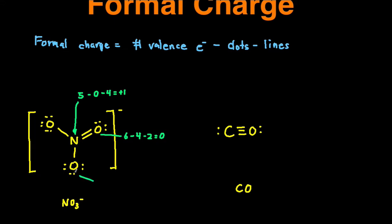Next let's take a look at this oxygen. It has six valence electrons minus the number of dots — one, two, three, four, five, six — and then minus the number of lines, which is one. That gives us a formal charge of negative one. Then lastly for this one: six minus six dots minus one line gives a formal charge of negative one. Notice that the sum of the formal charges equals the total charge of the compound: negative one plus positive one plus negative one plus zero gives us negative one, which is the overall charge of this ion.